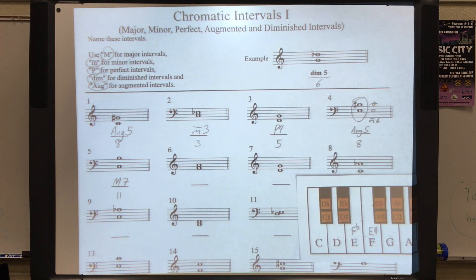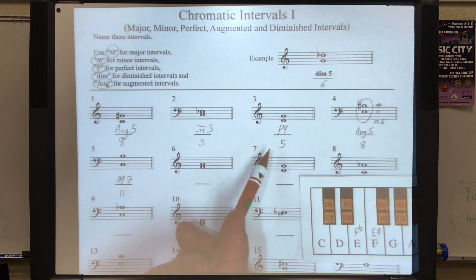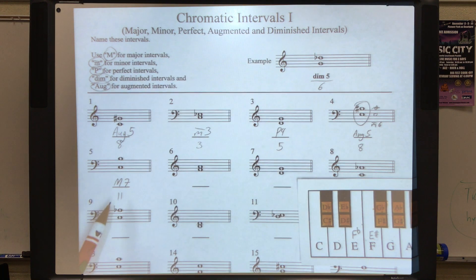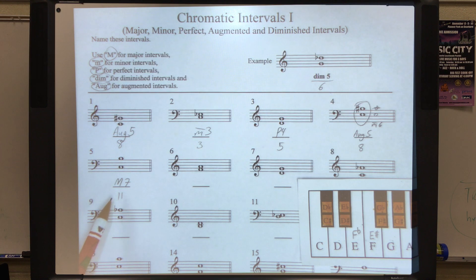Let me take a minute to play all these, the first five intervals for you. Number one is an augmented fifth. Number two is a minor third. Number three is a perfect fourth. Number four is an augmented fifth. Number five is a major seventh. Notice how crunchy that sounds.